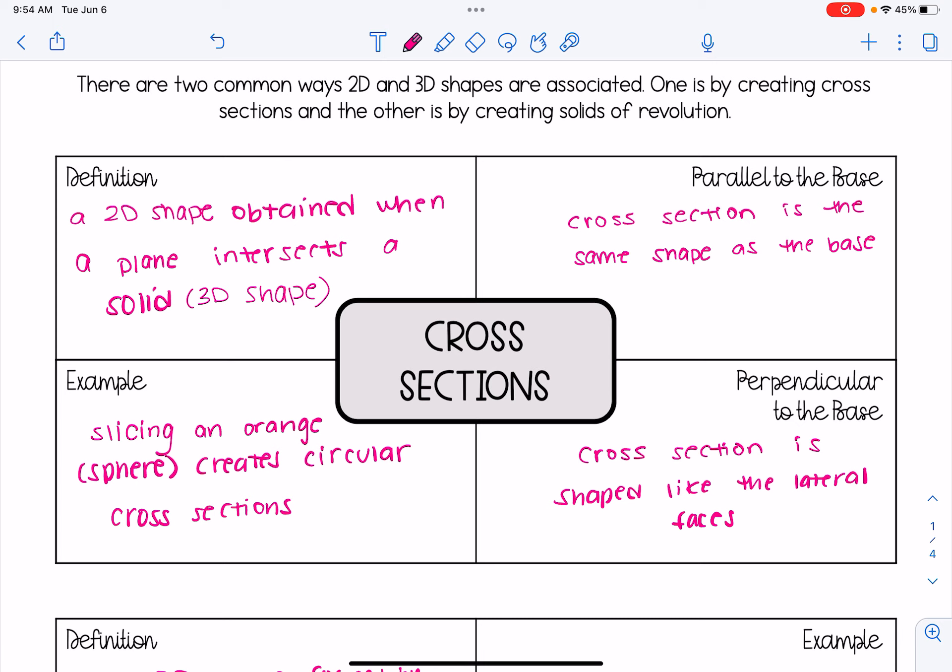Some hints to help you with cross-section questions. Whenever the cross-section is made parallel to the base of the solid, the cross-section is the same shape as the base. We'll look at some examples of that in a few minutes. And when it's perpendicular to the base, the cross-section is shaped like the lateral faces, like the sides of it. What if the shape does not have actual sides? We'll talk about what that means.